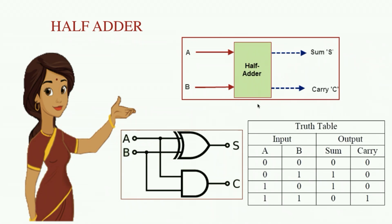This is the block diagram of a half adder. The sum bit is the XOR of the two inputs that are applied, and the carry bit is the AND of two inputs that are applied. And this is the truth table of a half adder.